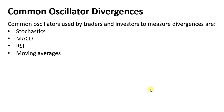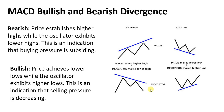What are the common oscillators we use to find these divergences? We use stochastic, MACD, RSI, and moving averages — they can all perform very well in finding divergences. I advise you to try each of these oscillators to find divergences. For today, we will use MACD as an example.